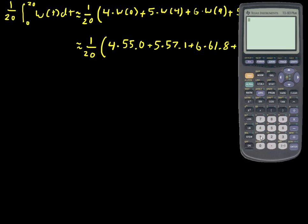All right, so 1/20 multiplied by 4 times 55.0, plus 5 multiplied by 57.1, plus 6 multiplied by 61.8, plus, last but not least,